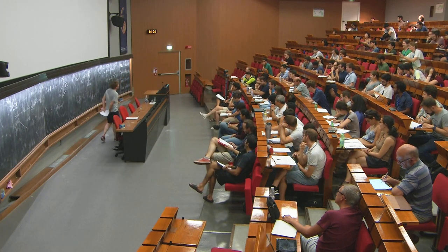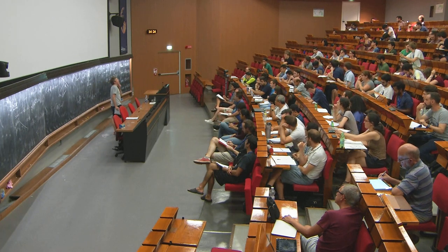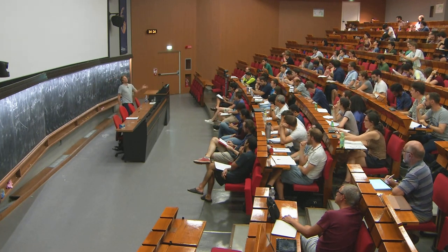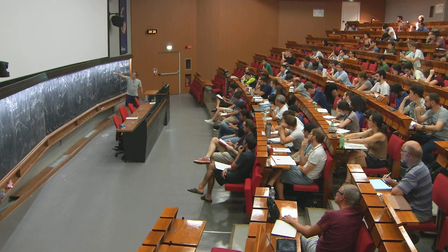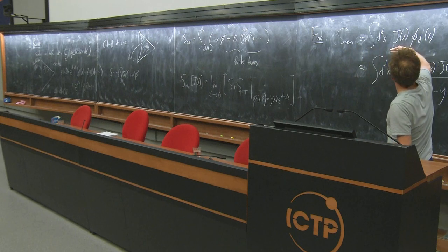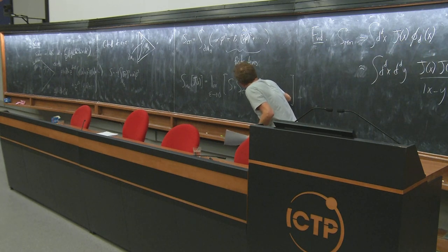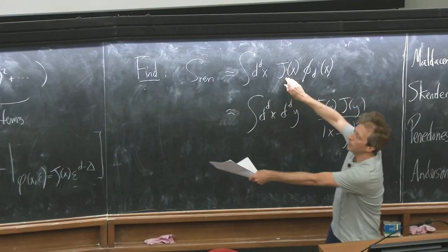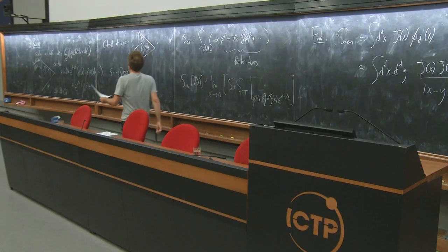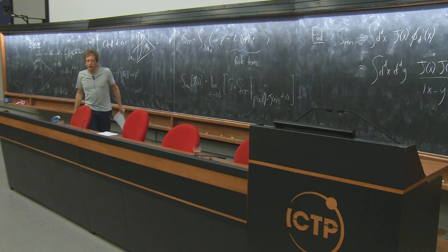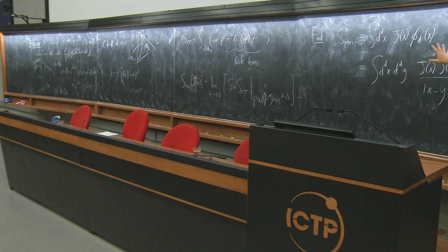When one does that, the renormalized on-shell action takes this form: it's determined by the Dirichlet boundary condition — think of that as phi_0, but I'll call it J — and this second bit of data phi_d, which is determined by solving the equation. As we said last time, it can be written as an integral of J against some kernel and explicitly takes this specific form.